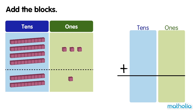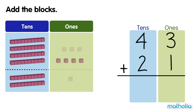Add the blocks. There are 43 blocks and 21 blocks. First, let's add the ones. Three ones plus one one equals four ones.